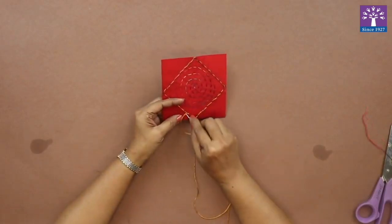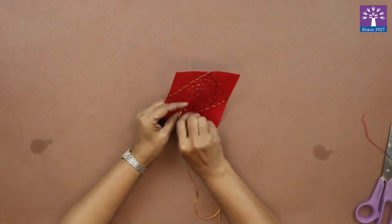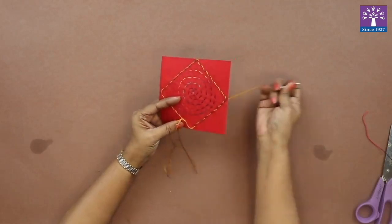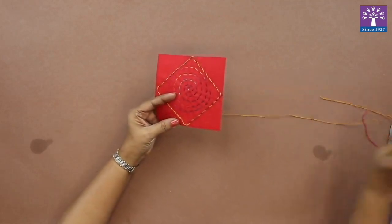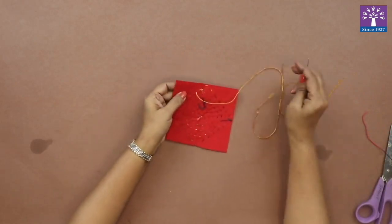At the end, we'll poke the needle again through the felt cloth on the reverse side and secure it with a knot.